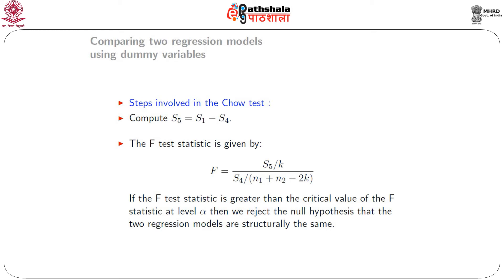In the third step, we compute S₅ = S₁ - S₄, where S₁ is the residual sum of squares from the common regression fitted in step one. In step four, under the assumptions of the Chow test, the test statistic is: F = (S₅ / k) / (S₄ / (n₁ + n₂ - 2k)). If this F statistic exceeds the critical value F_α, we reject the null hypothesis that the two regression lines are the same, concluding that a structural change has taken place between the two periods.